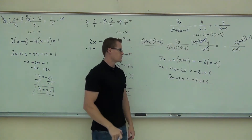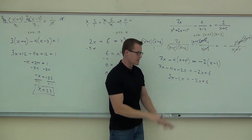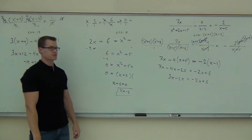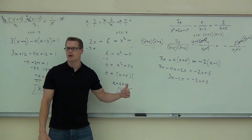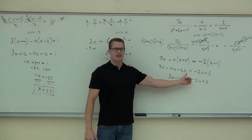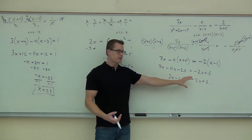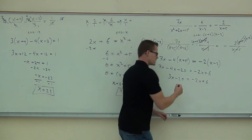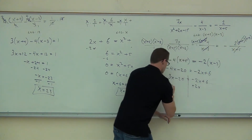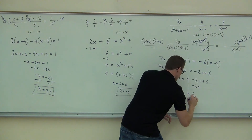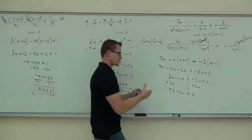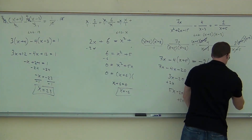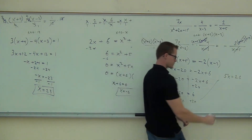Next question: am I supposed to get everything to one side with zero on the other? Is this problem the same as a quadratic? The difference is x squared — that's the only reason we set it equal to zero and factor. I don't even have an x squared here, so that does me no good. Instead, get rid of the smaller variable. Our smaller variable is 2x, so we add 2x to both sides and get 5x minus 20 equals 6. Add 20: 5x equals 26. Our last step is to divide by the coefficient — x equals 26 over 5.